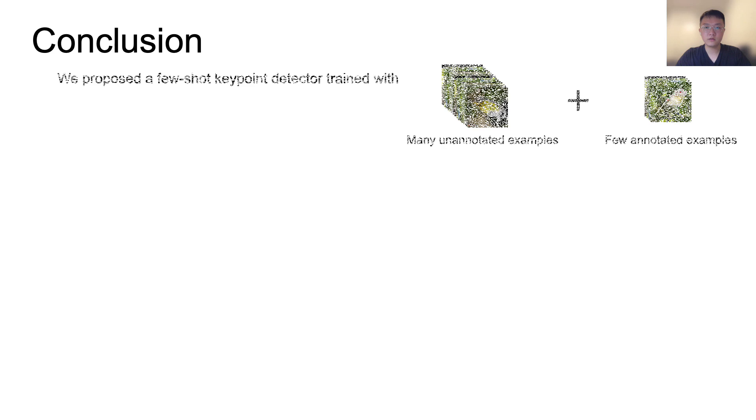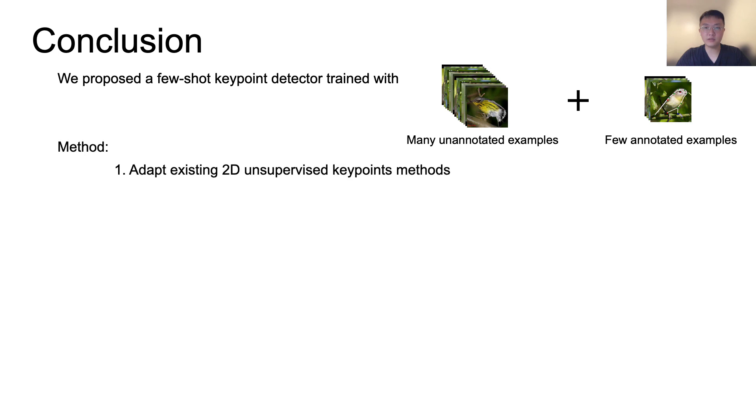In conclusion, we propose a few-shot keypoint detector trained with many unannotated examples and few annotated examples. We adapt existing powerful 2D unsupervised keypoint methods to a few-shot setting and propose to constrain keypoints in 3D while modeling keypoint occlusion.